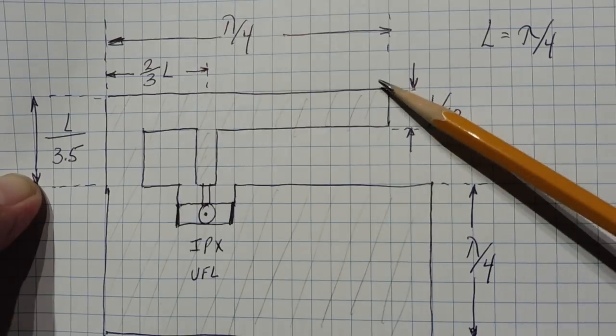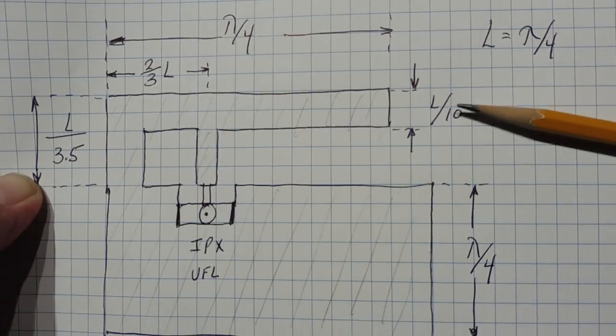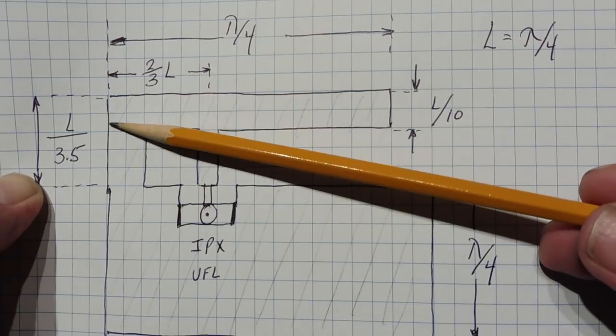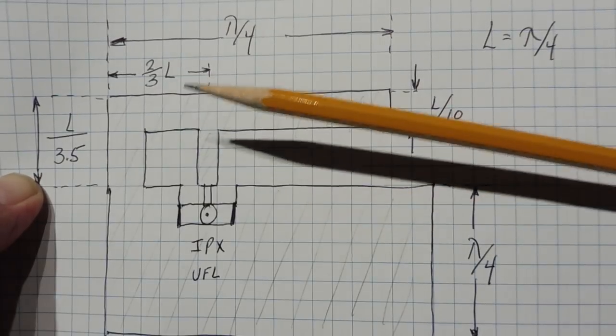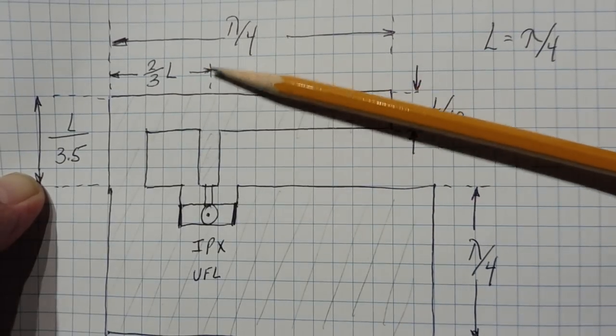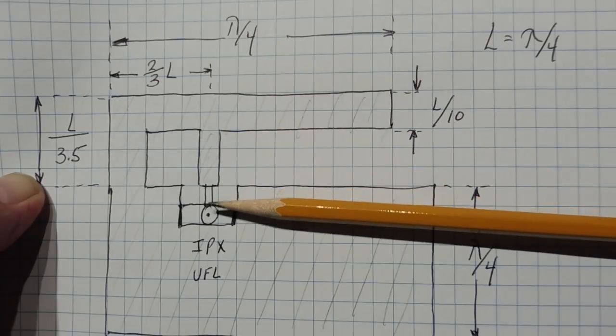And the width of it is L over 10. The height of it is L over 3.5. And the feed point is 2 thirds L. And that will give us our 50 ohm feed point.